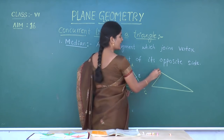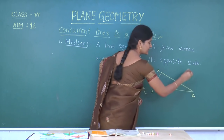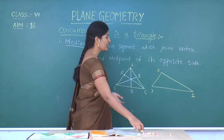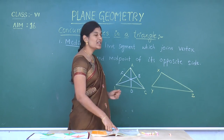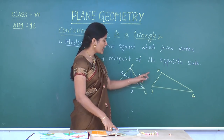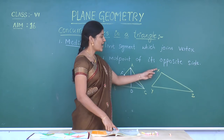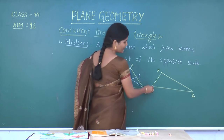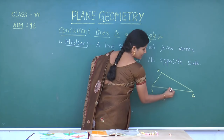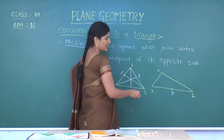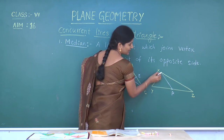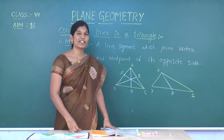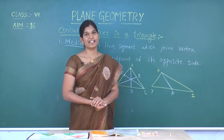Now let it be triangle XYZ. Draw the median passing through X. If the median is passing through X, we have to take the midpoint of the opposite side, which is YZ. Now identify the midpoint and let it be P. Then XP is called the median. We can draw 3 medians in a triangle.